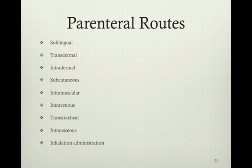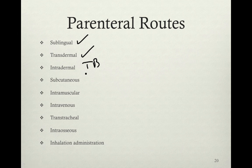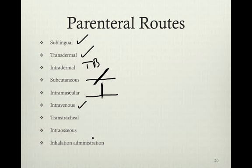Parenteral routes — most of these are what we use in EMS: sublingual, transdermal, intradermal, subcutaneous, intramuscular, intravenous, transtracheal, intraosseous, and inhalation administration. Sublingual means underneath the tongue. Transdermal would be via a patch or nitropaste. Intradermal is just underneath the skin and causes a wheal — we generally use this for TB tests. Subcutaneous is in the fat layer at a 45-degree angle to get into the adipose tissue. Intramuscular is 90 degrees. Intravenous — be sure you are patent and inside the vein. Transtracheal is via the ET tube. Intraosseous is via IO needle into the actual bone. Inhalation includes nebulization and metered-dose inhalers.